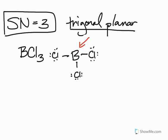In this case, boron is the central atom, and it looks like it has three bonding areas. And around boron, there are zero lone pairs. So three bonding areas, zero lone pairs, we add that together, we get a steric number equal to three.